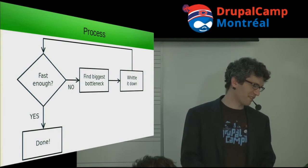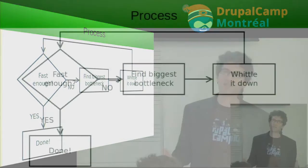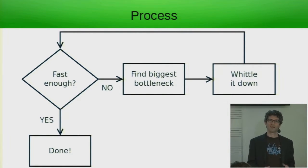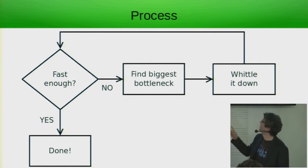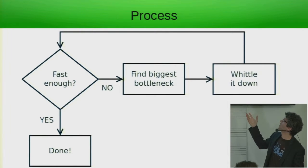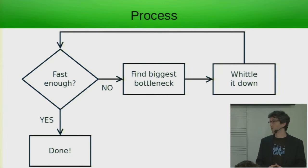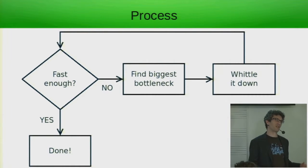Generally, the process is as follows. You've got your website, and you're asking: is it currently fast enough on this page or this site? If it is, great, you're done. Assuming it isn't, find your biggest bottleneck — figure out what the problem is and whittle that down. Fix that, then go back to the beginning. Is it fast enough now? If not, deal with the next problem. Don't try to solve everything at once.